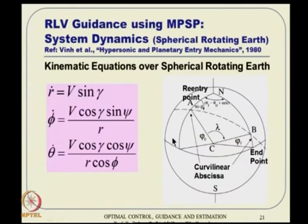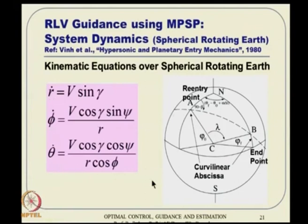The dynamics are taken from a reference book that covers spherical, rotating Earth dynamics. The position coordinates are r (radius from Earth's center), latitude φ, and longitude θ. The kinematic equations cover position, and the dynamic equations cover velocity magnitude V, flight path angle γ, and heading angle ψ. This formulation is based on spherical trigonometry for a rotating Earth.